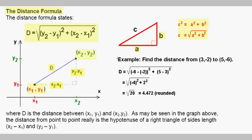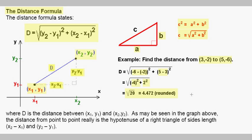Now let's look at an example with the distance formula. We are going to find the distance from the point (3, negative 2) to (5, negative 6). We plug in the values: y2 minus y1 is negative 6 minus negative 2, and x2 minus x1 is 5 minus 3. Negative 6 minus negative 2 gives negative 4, so we have the square root of negative 4 squared plus 2 squared, which gives us the square root of 20, or approximately 4.472.